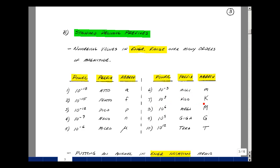Kilo, 10 to the 3, capital K. Mega, 10 to the 6th, capital M. Giga, 10 to the 9th, capital G. And then tera, 10 to the 12th, capital T.